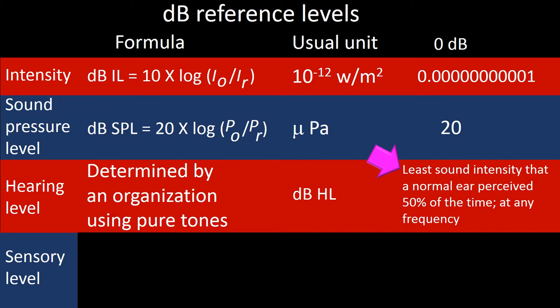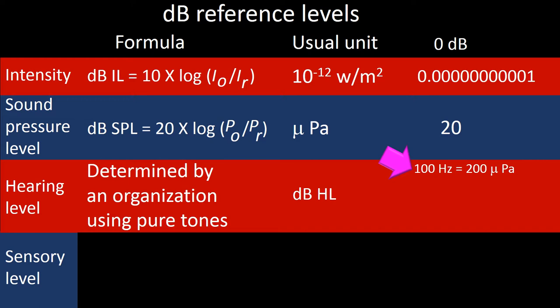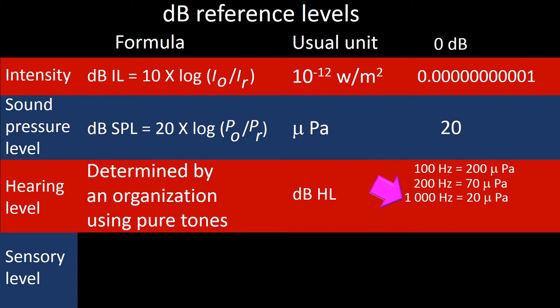One organization using the relation between hearing level and pressure gave the following values: when tones of 100 Hz are used, 0 dB corresponds to 200 micropascals SPL; when pure tones of 200 Hz are used, 0 dB corresponds to 70 micropascals SPL; when pure tones of 1000 Hz are used, 0 dB corresponds to 20 micropascals; and when pure tones of 4000 Hz are used, 0 dB corresponds to 80 micropascals SPL.